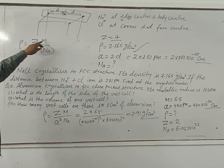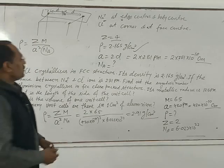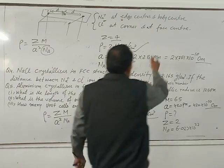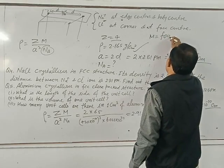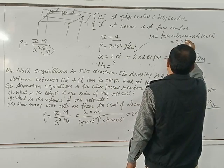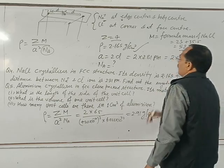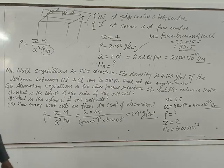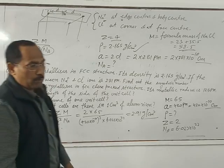Rho equals Z times M divided by A cubed times N. What is the value of M? Since the crystal is NaCl — an ionic crystal — M equals the formula mass of NaCl, which is 23 plus 35.5 equals 58.5. This is the value of M. Substituting these values, we can calculate Avogadro's number, which comes out to be nearly 6.023 times 10 to the power 23.